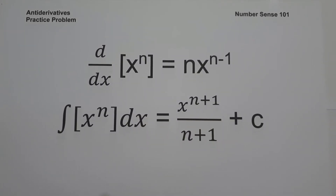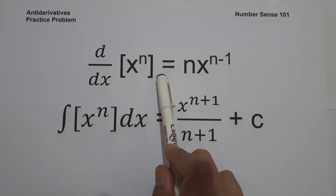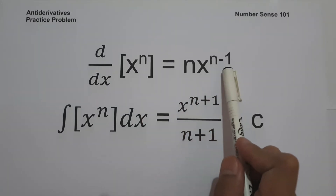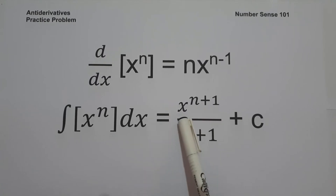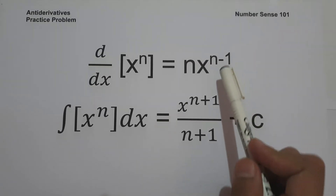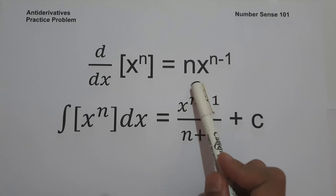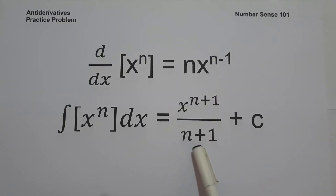In this video, we are going to have a basic introduction of integration on how to find the antiderivative of a certain function. If you can still remember, according to the power rule, the derivative of x raised to n is equal to n multiplied by x raised to n minus 1. Now, the power rule when dealing with antiderivatives: the antiderivative of x raised to n dx is x raised to n plus 1 over n plus 1 plus c. So instead of subtracting 1, we simply add 1 on the exponent, and instead of multiplying by n, we simply divide by n plus 1.